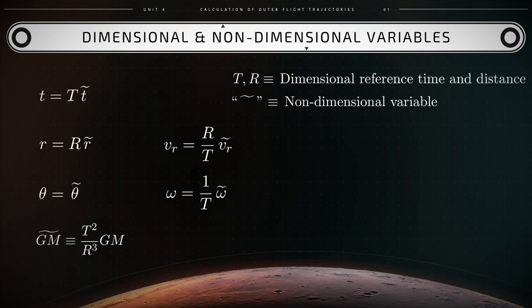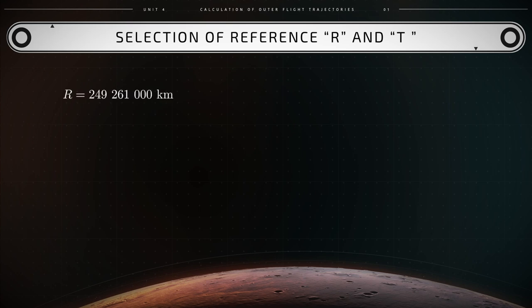The tilde continues to denote non-dimensional variables. gm tilde can be made much smaller than gm dimensional through a careful selection of the reference time capital T and the reference length capital R, so that capital T squared over r cubed becomes much smaller than one. The reference length capital R may be chosen to equal the maximum distance between the center of mass of the Sun and the center of mass of Mars. As a consequence capital R will equal 249 million 261 thousand kilometers. The result for r tilde then becomes the ratio of r-dimensional over r as a reference length that provides us with the following result 0.60019. This number is so much smaller than the dimensional r.